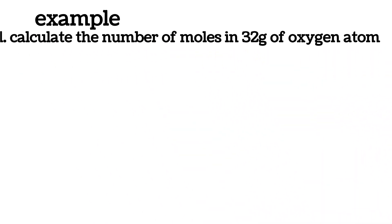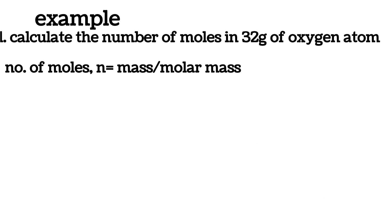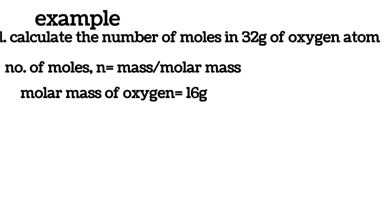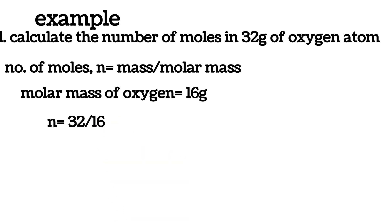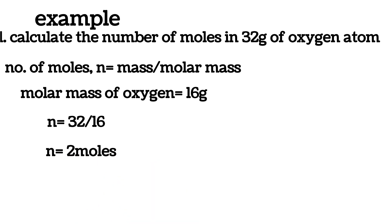Example 1: Calculate the number of moles in 32 grams of oxygen atoms. Remember, the number of moles n = mass ÷ molar mass. The molar mass of oxygen is 16 grams. Therefore, the number of moles = 32 ÷ 16 = 2 moles of oxygen.